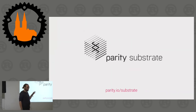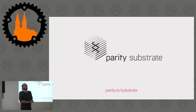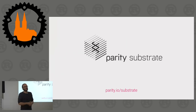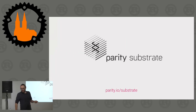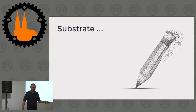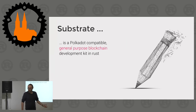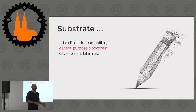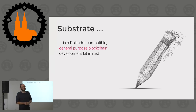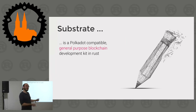Through developing Polkadot, which is a blockchain itself, we noticed very quickly that there are a lot of things common when building any blockchain. We started building our own framework - Substrate - which we now build Polkadot on. Substrate in general is a Polkadot-compatible general purpose blockchain development kit. If you are intending to build your next blockchain and you want to do it in Rust, you might want to check out Substrate.